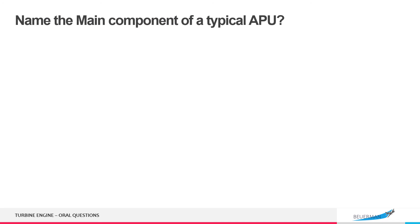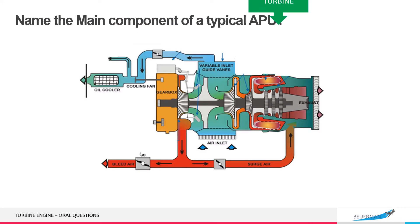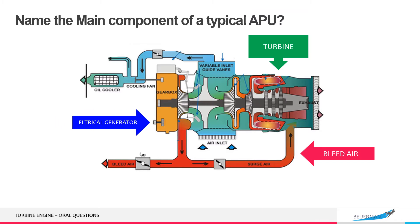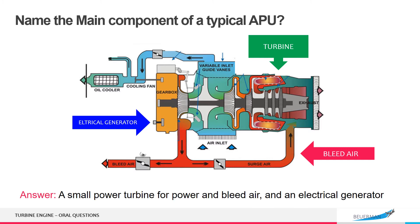Name the main components of a typical APU. A small power turbine for power and bleed air, and an electrical generator.